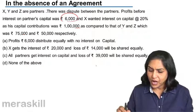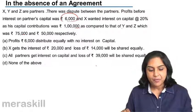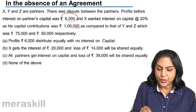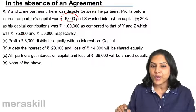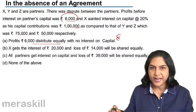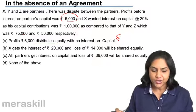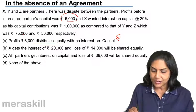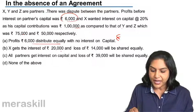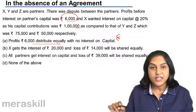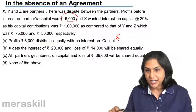So, what are the options here? Option A: profits of 6,000 are distributed equally with no interest on capital — this seems to be the right option. Option B: X gets interest of 20,000; if X were to take interest of 20,000, the loss would be 14,000 and this would be shared equally.